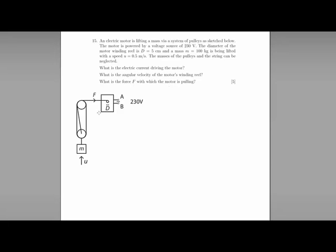Question number 15. We have an electric motor here that is lifting a mass via these pulleys. The motor voltage is 230 volts. The diameter of the reel in the motor here is 5 centimeters, and the mass is 100 kilograms, and it's being lifted with a speed of 0.5 meters per second as measured here, where the mass is actually moving upwards.